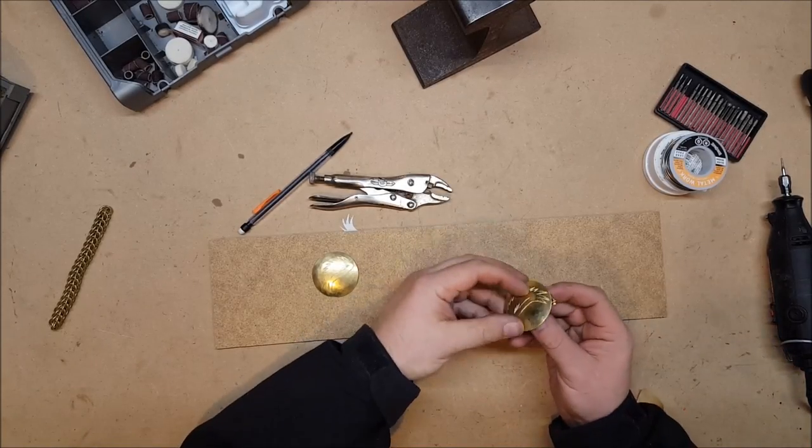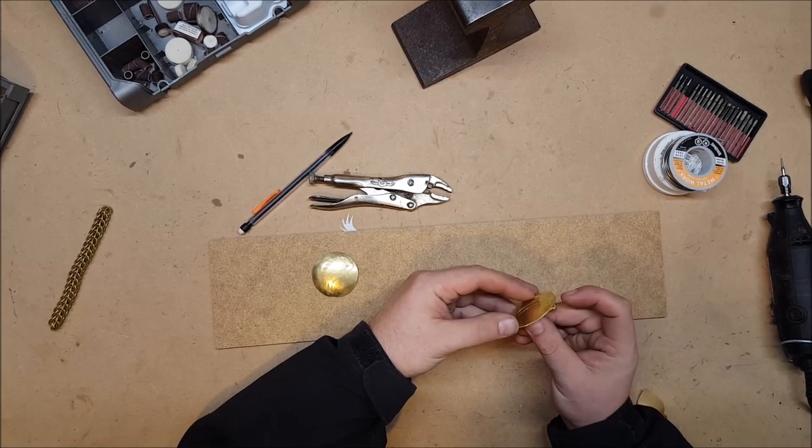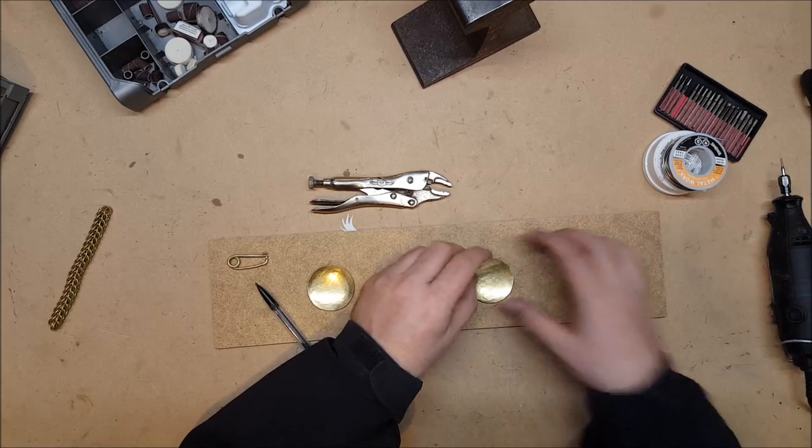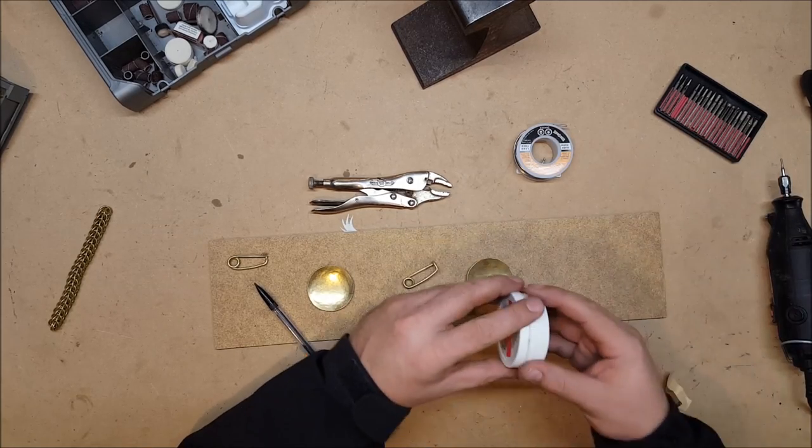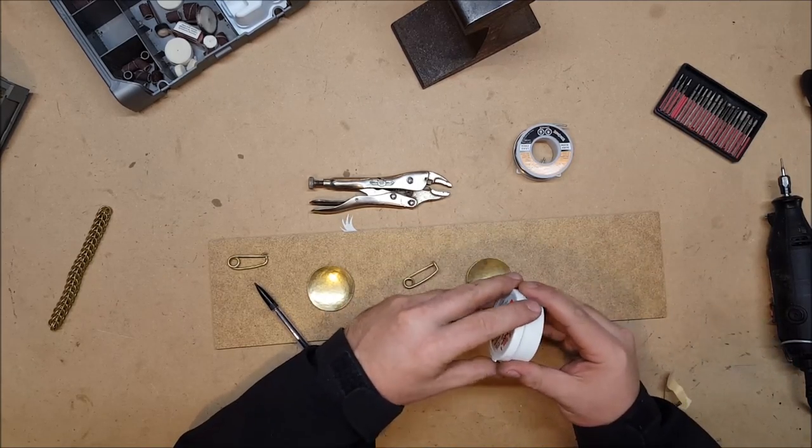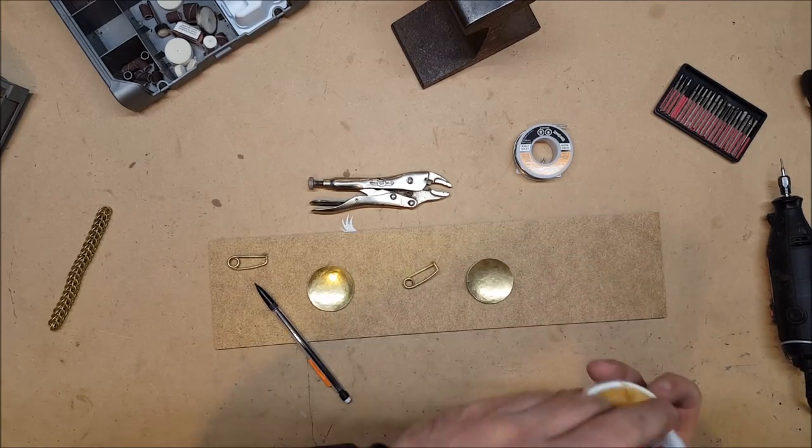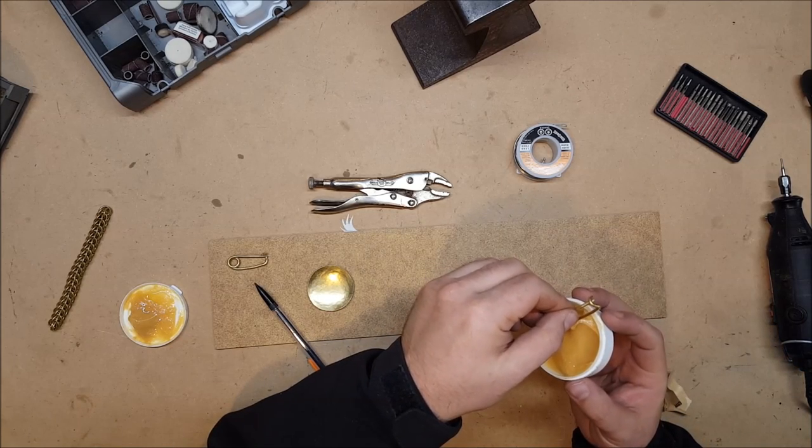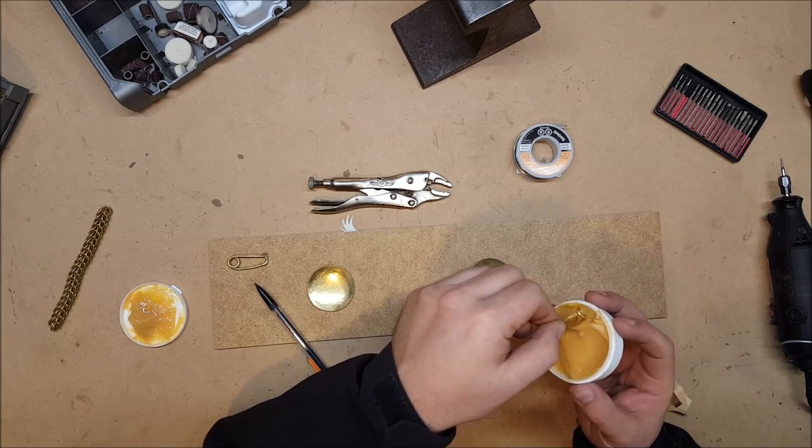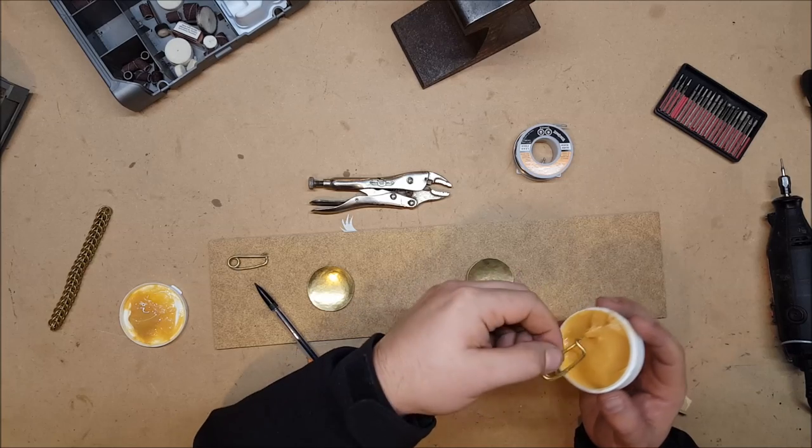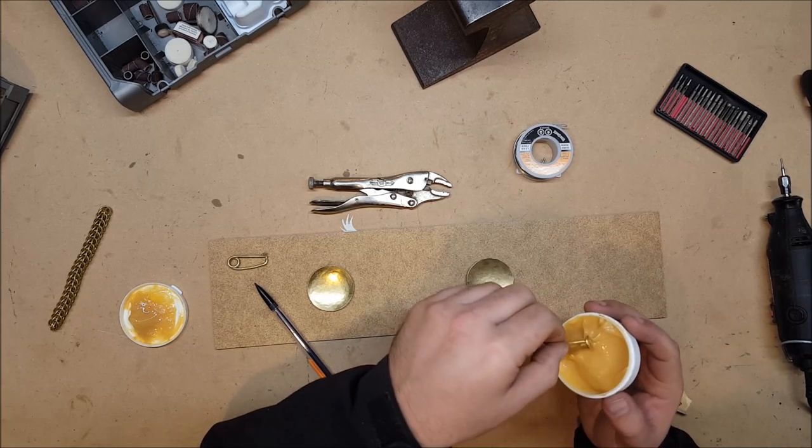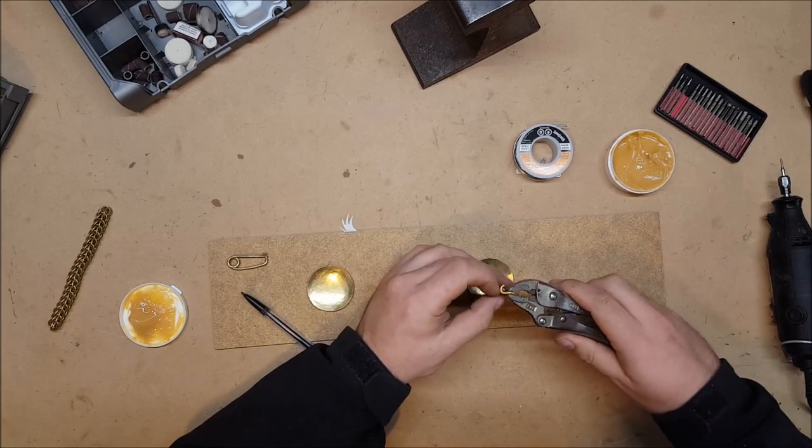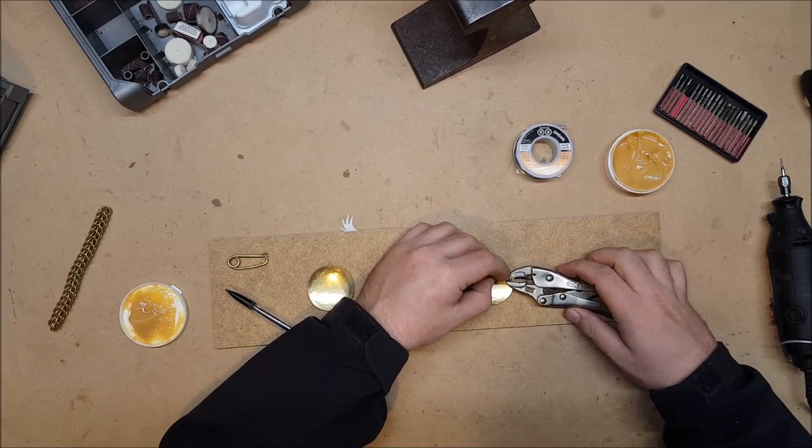First thing we need to figure out is exactly how we want the pins on here. What we need is some of this messy flux that we will put where we want the solder. I'm gonna use a vise grip to hold it upright right where we want it.